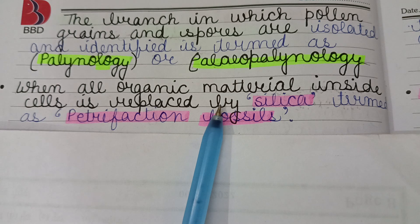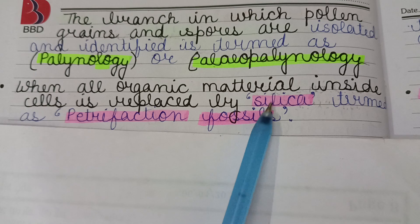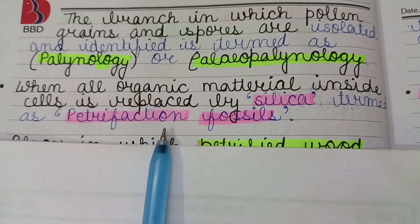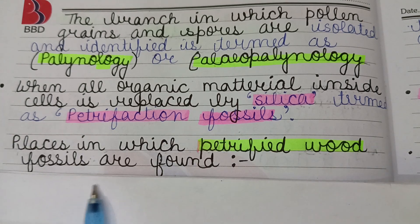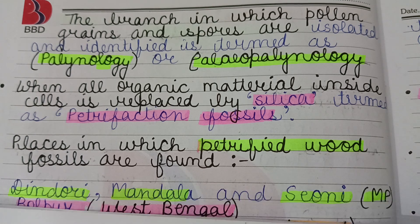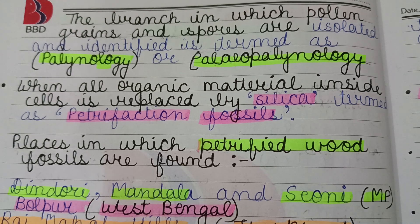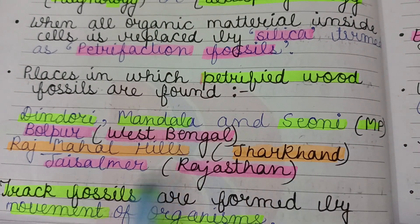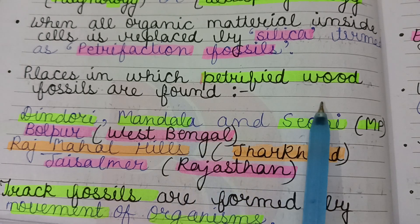When organic matter is replaced by silica over time, those fossils are called petrifaction fossils. Places in India where petrified wood fossils are found include: Dindauri, Mandala, and Sioni in Madhya Pradesh; Bolpur in West Bengal; Rajmahal Hills in Jharkhand; and Jaisalmer in Rajasthan.